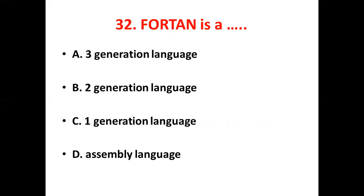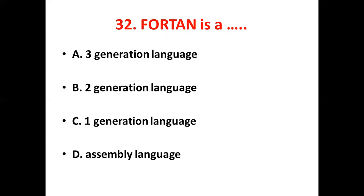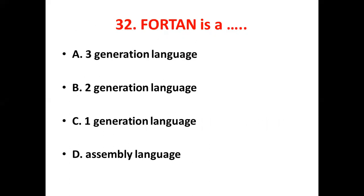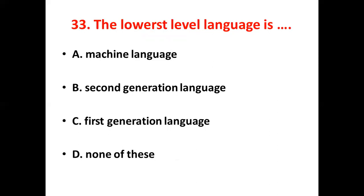32nd bit: FORTRAN is a dash. Option A, Third generation language. Option B, Second generation language. Option C, First generation language. Option D, Assembly language. The answer is Option A, machine language — correction: FORTRAN is a third generation language.